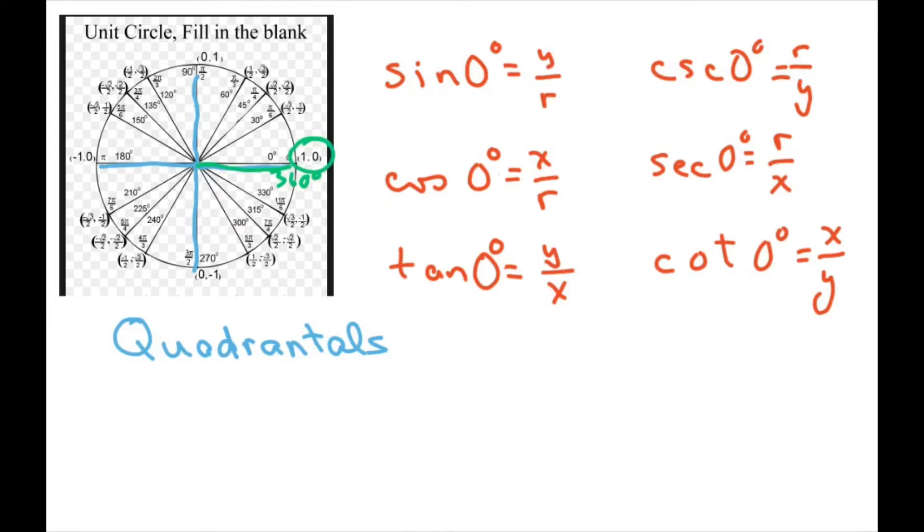So we're going to start with 0 degrees, and our x and y are 1, 0, or r equals 1. So you plug that in for your trigonometric functions. y is 0, r is 1, so you get 0. For x, you get 1 divided by 1. Then for tangent, you get y over x, so y is 0, and x is 1, and that equals 0.